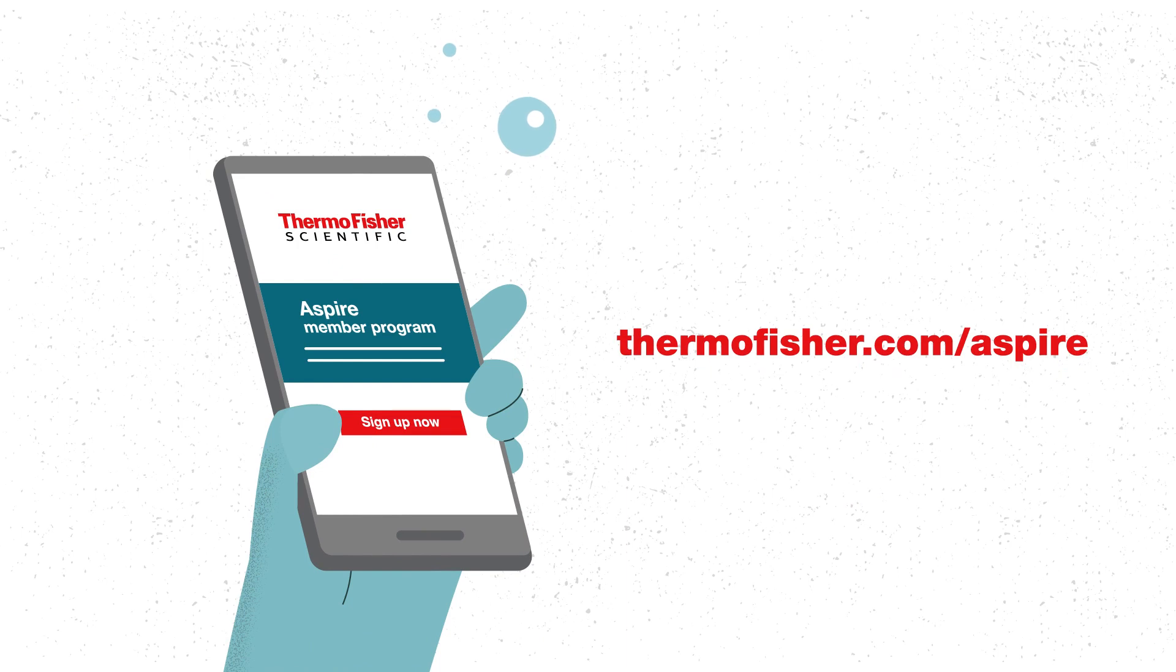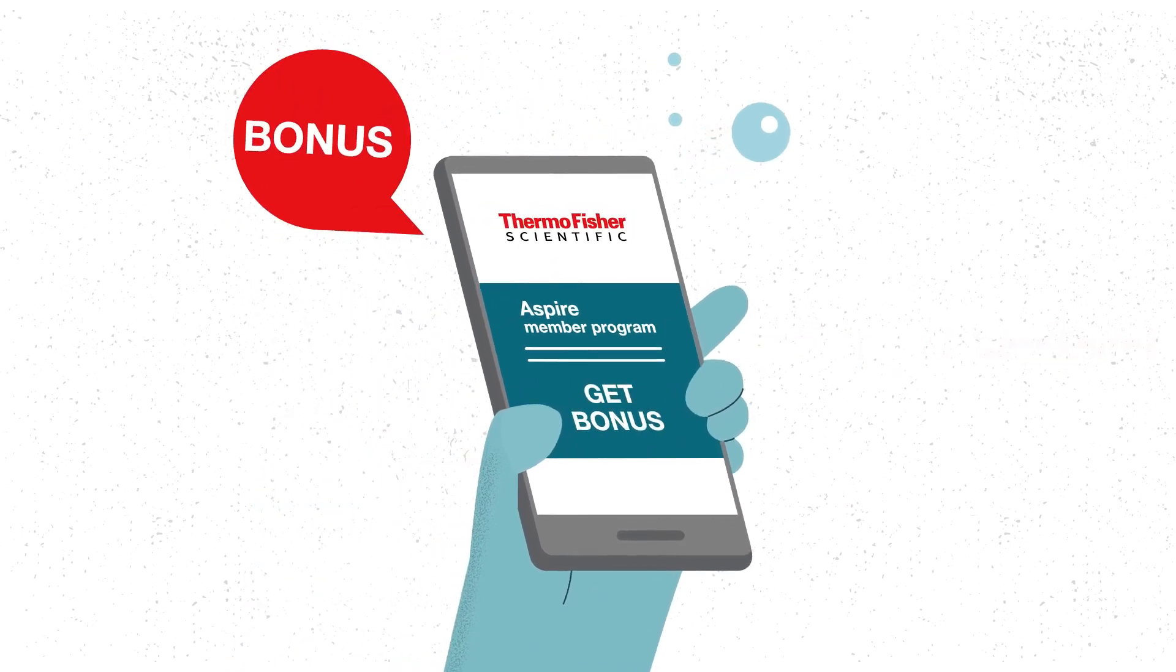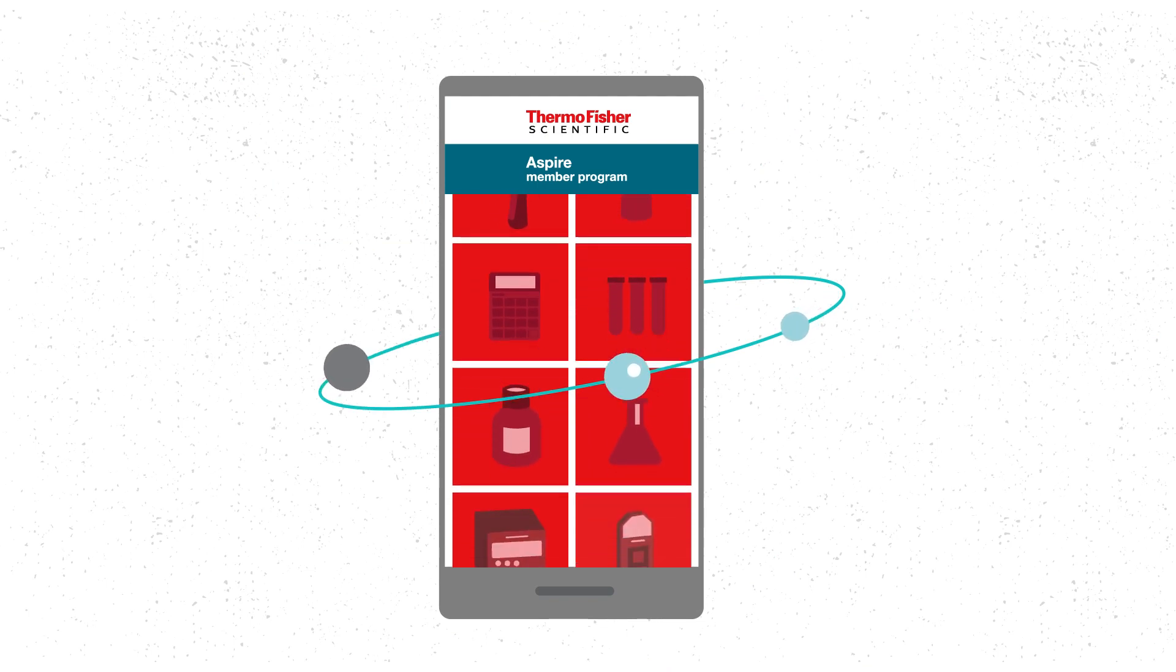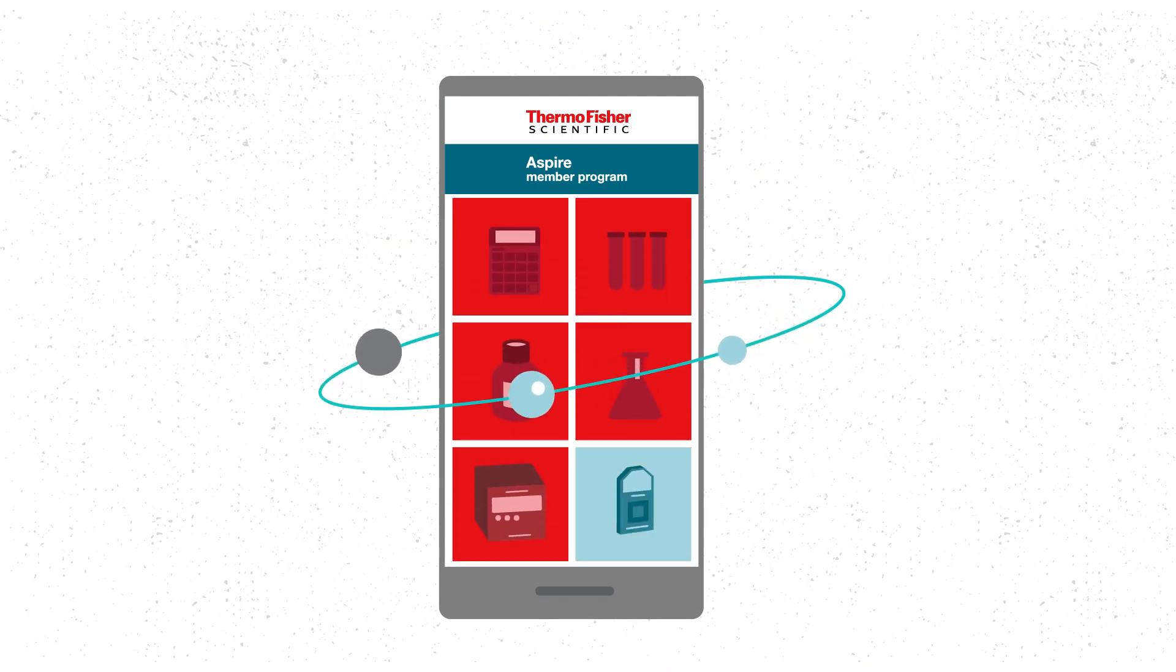Here's how it works. First, sign up at thermofisher.com/aspire and receive bonus points just for joining. Then select a free full-sized product from over 100,000 options.